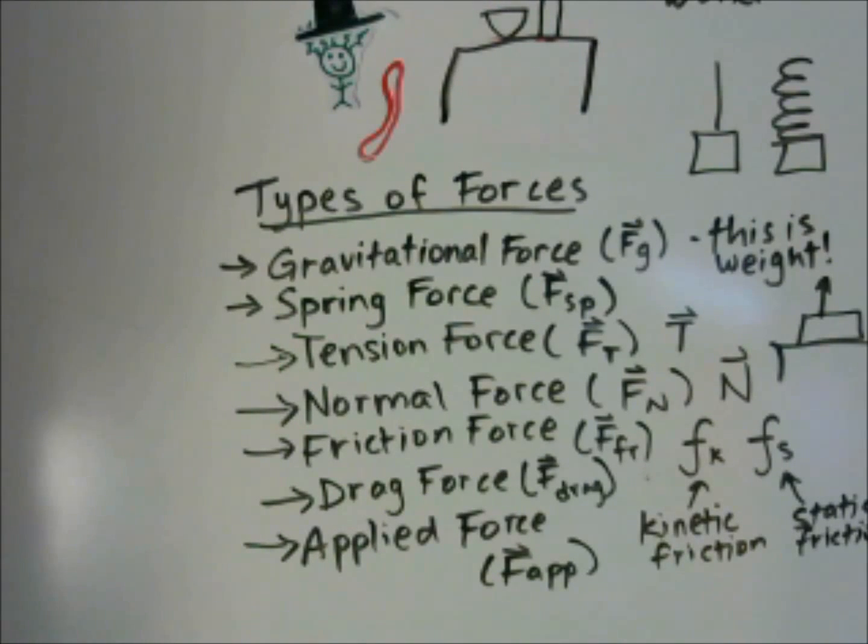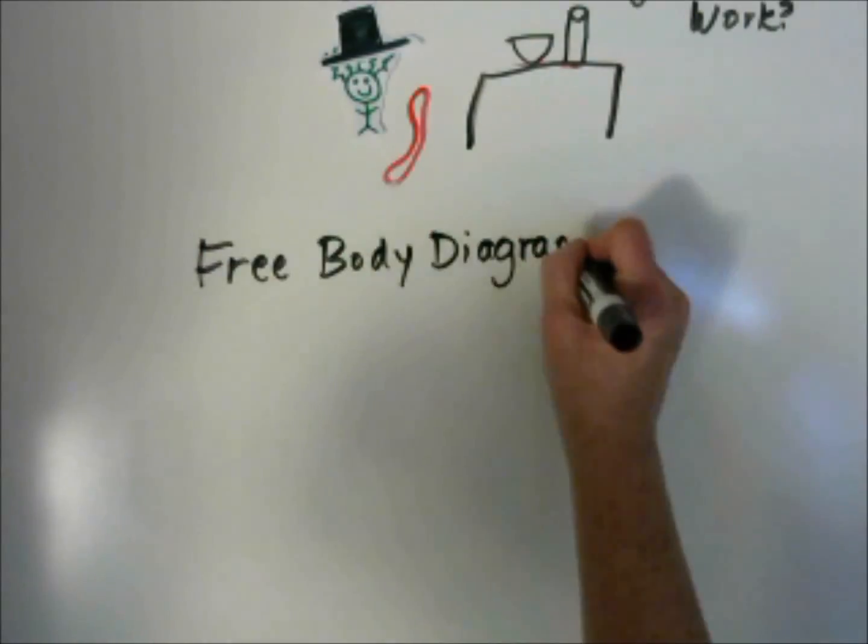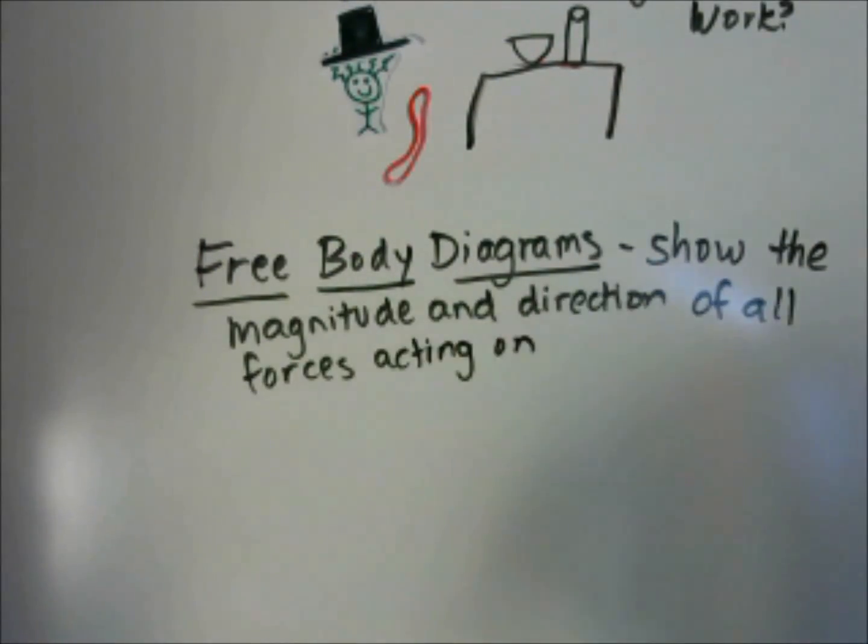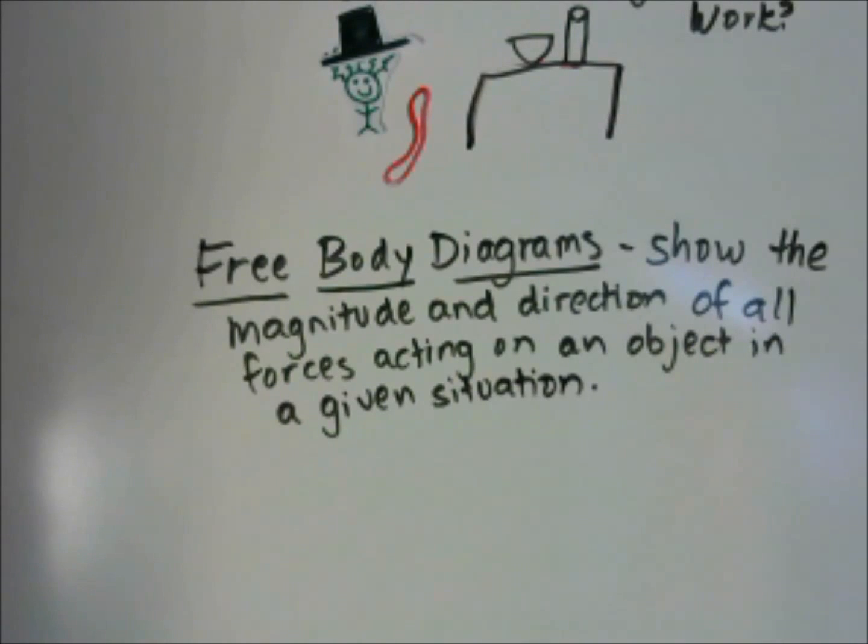Now that we know the kinds of forces, I'm going to show you how to draw a free body diagram. This is so that you can look at an object and see what forces are acting on it. Free body diagrams show the magnitude and direction of all forces acting on an object in a given situation.